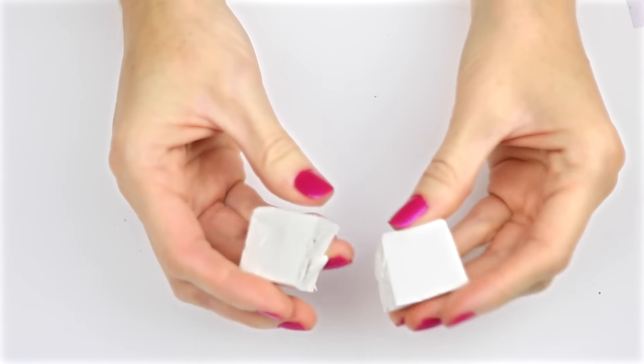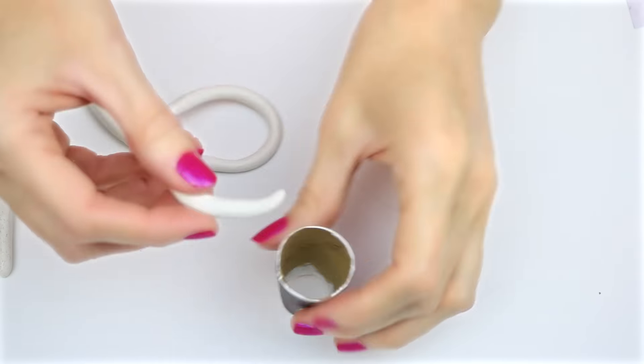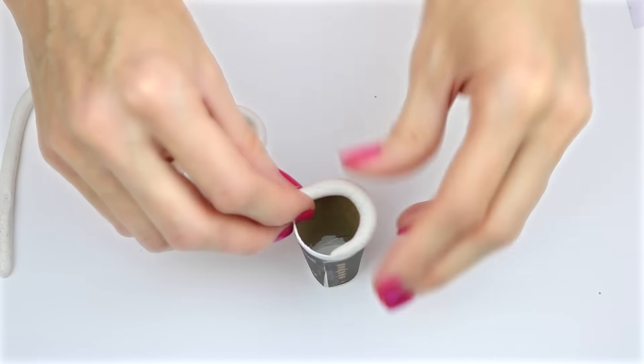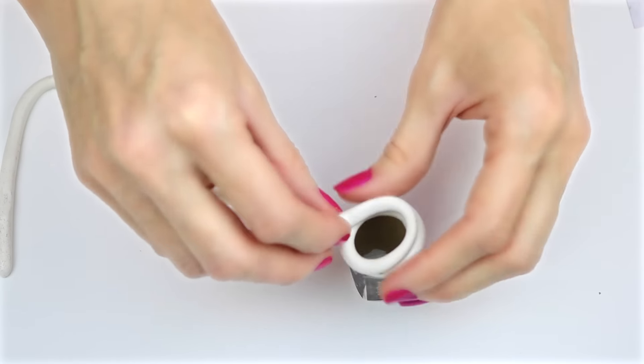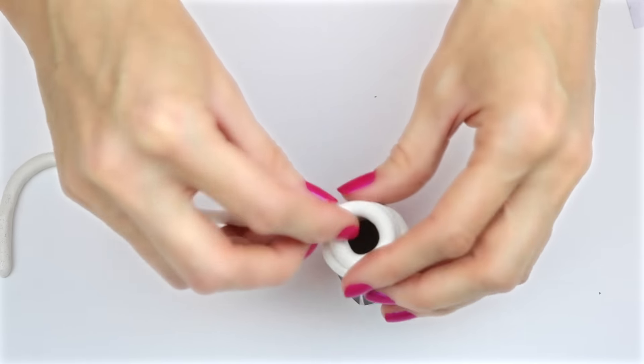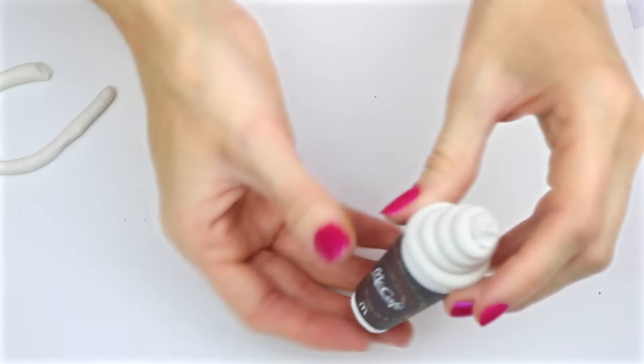I'm going to use a piece of white eraser clay. I'm just going to roll half of it into a ball, and then into a snake shape and wrap it around the cup, making it look like whipped cream. Once I had my whipped cream formed, I removed it from the paper cup. And I baked the eraser clay in the oven according to the package instructions.